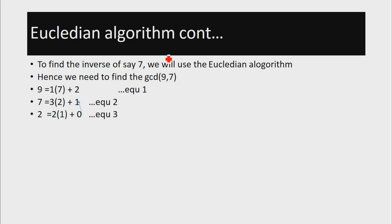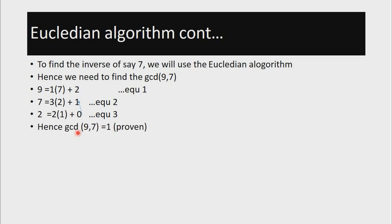To recap the GCD method: we express the elements on the left in terms of the elements in the middle, then express those middle elements in terms of the remainders. That is why we express 7 in terms of 2 — which was initially the remainder — and then express 2 in terms of 1. That is basically the method we use to find the GCD, which confirms the GCD of 9 and 7 is equal to 1.